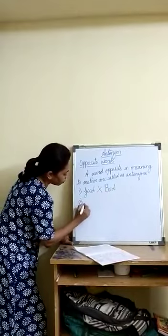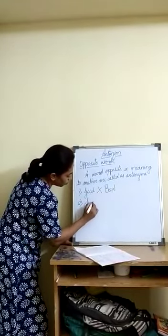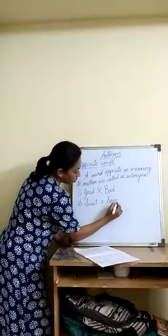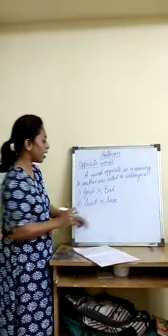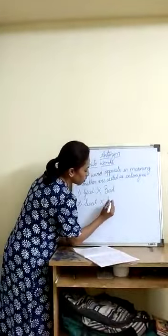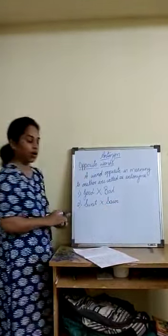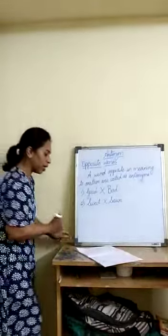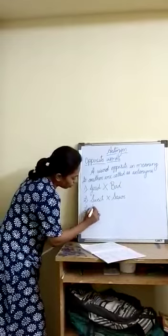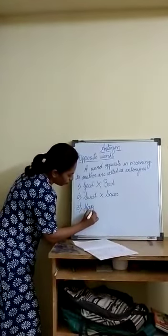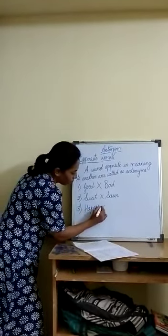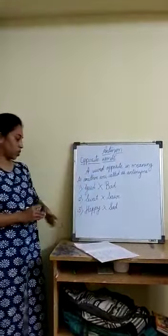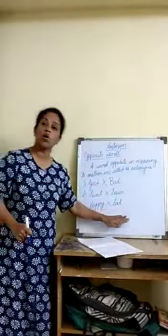And then 'sweet' — the opposite is 'sour'. Sweet and sour. Next, 'happy' — and then 'sad'. Happy and sad.